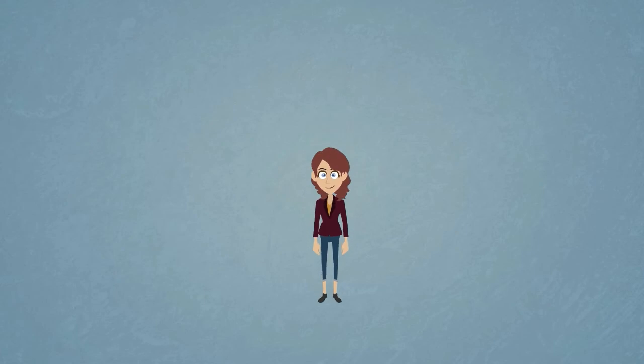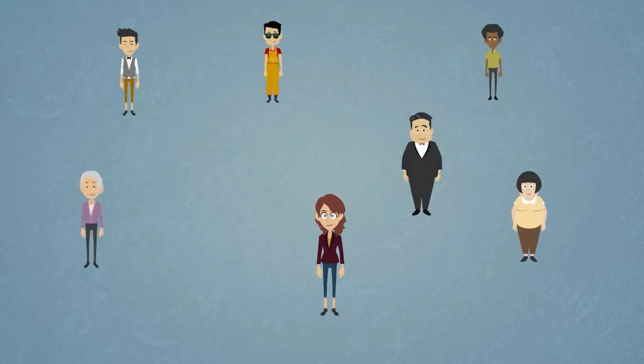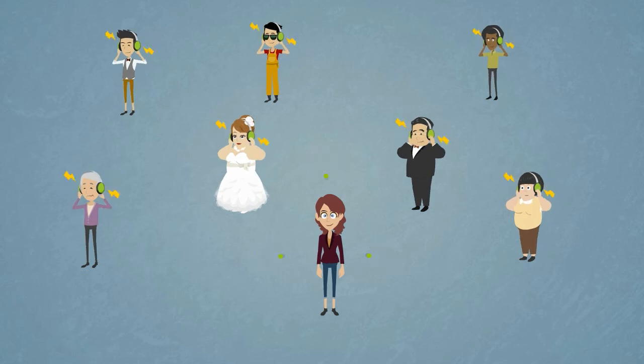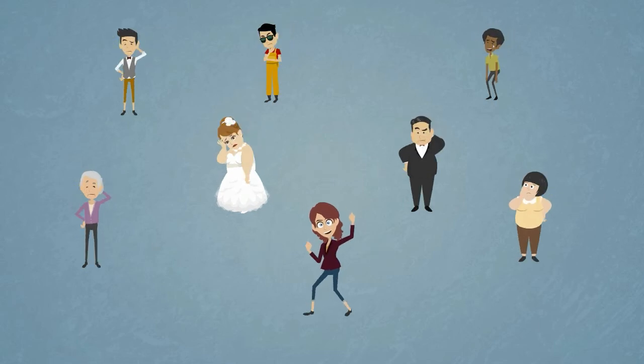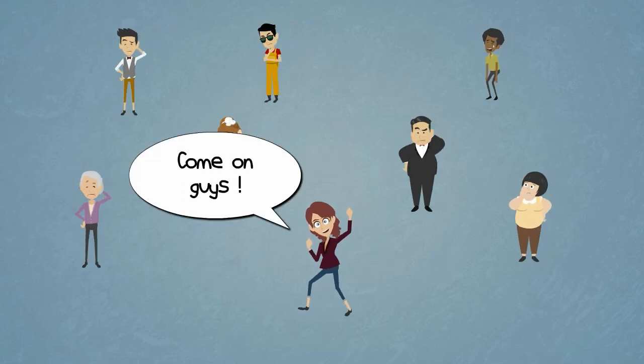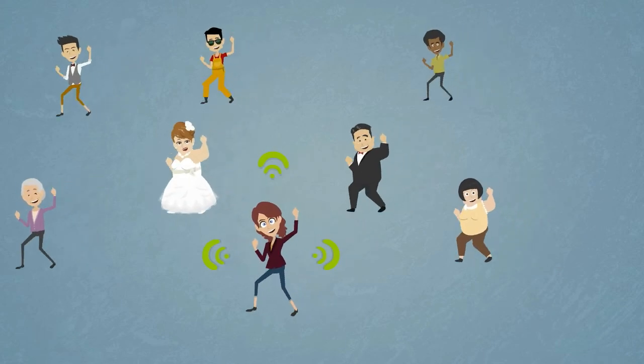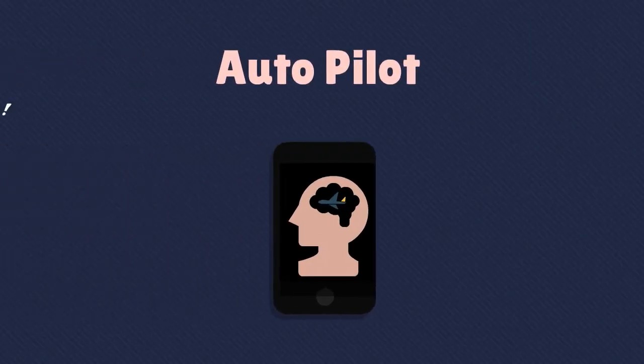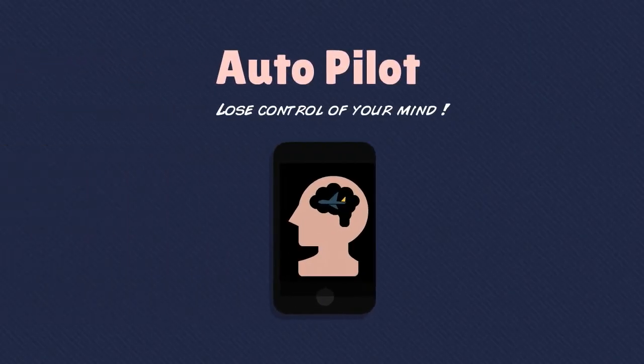And with Autopilot's multiplayer feature, you can sync to your friends' brains. Autopilot. Now you don't need 15 or 20 dancers to do a flash mob. You just need one. Autopilot. Lose control of your mind.